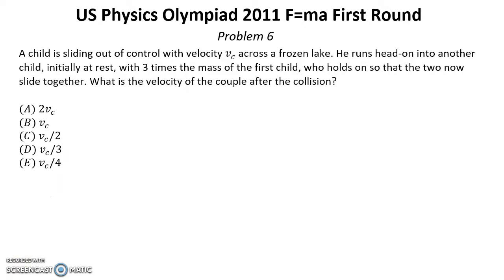Problem number six. Solution for this problem you can find below this video in the reference of this description. A child is sliding out of control with a velocity vc across a frozen lake. He runs head on into another child initially at rest with three times the mass of the first child. Who holds on so that the two now slide together. What is the velocity of the couple after the collision?